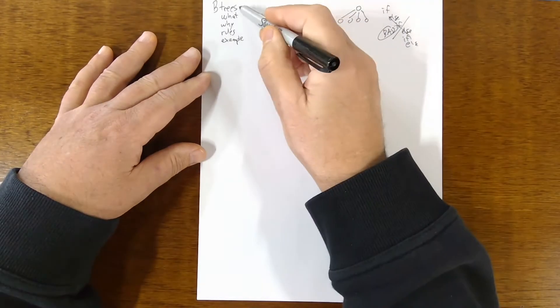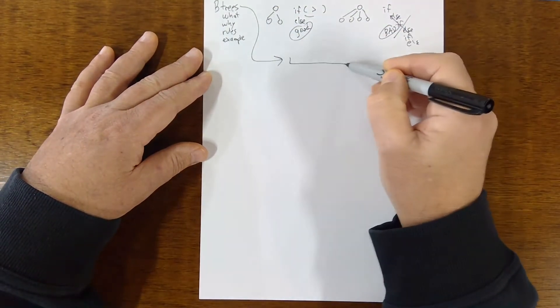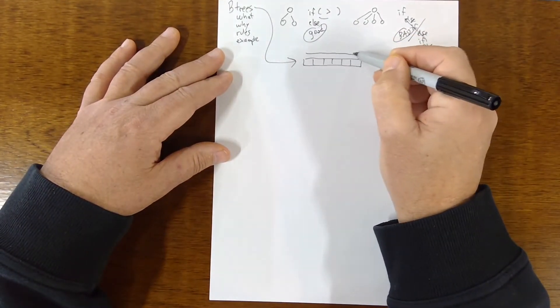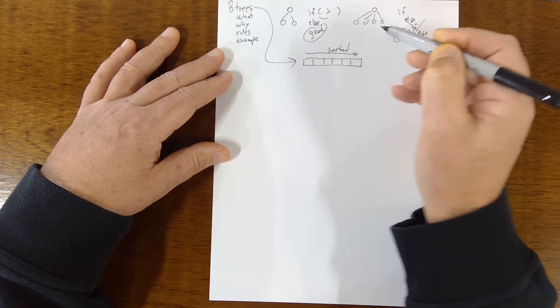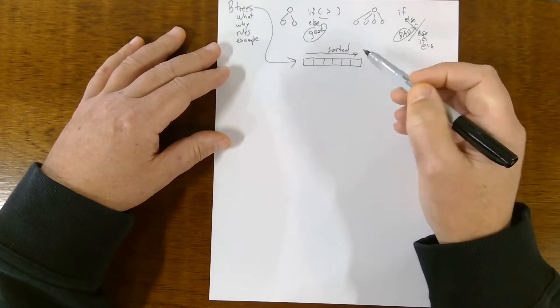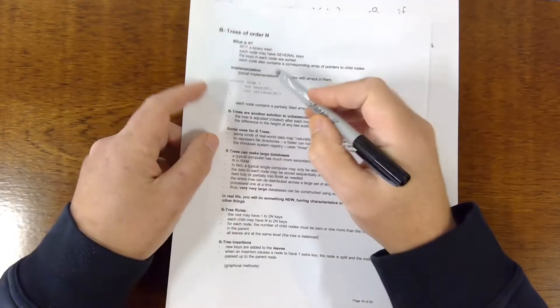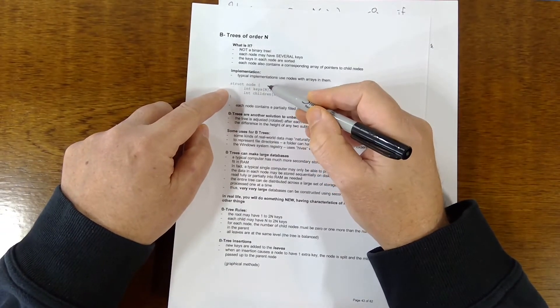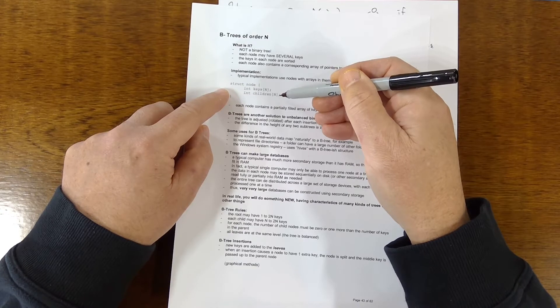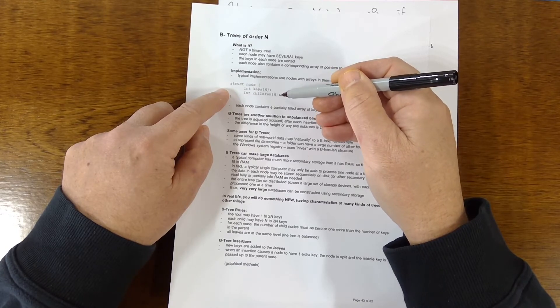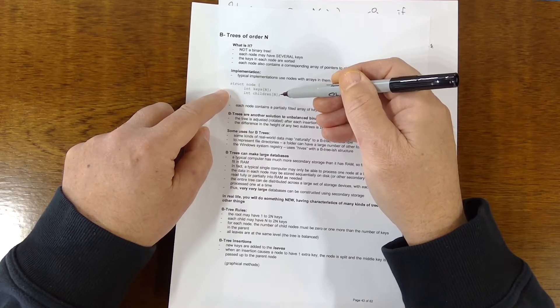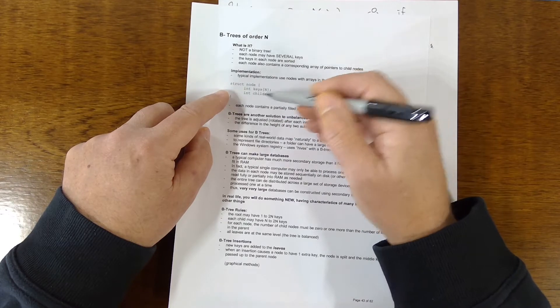So instead of that, what a B-tree has is it has an array. Each node is an array, and we insert data in the array in sorted order. And so that's basically the idea. So in the nodes, you can see I have a structure here where each node is an array with n keys and then n children. And these children are some kind of pointer to the child nodes. And here it's an integer, but it could be an actual pointer.